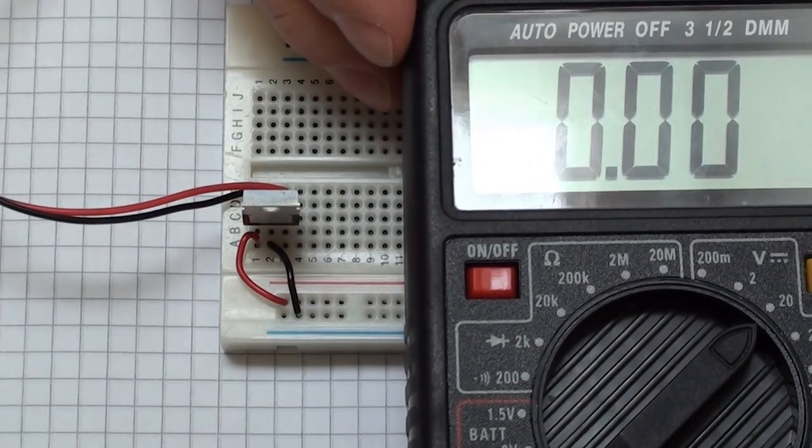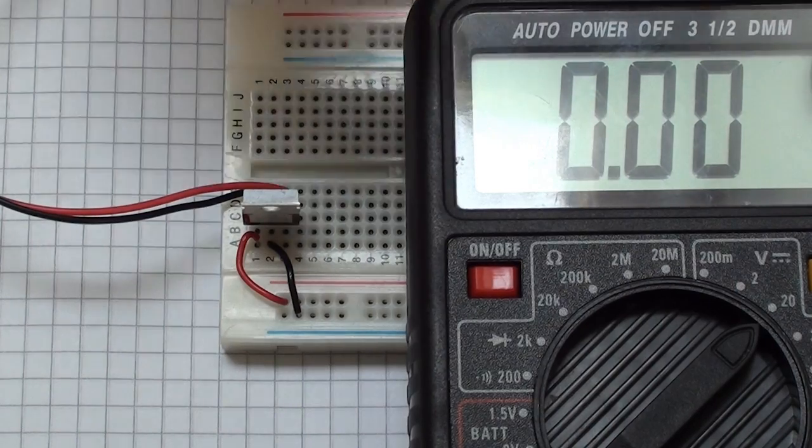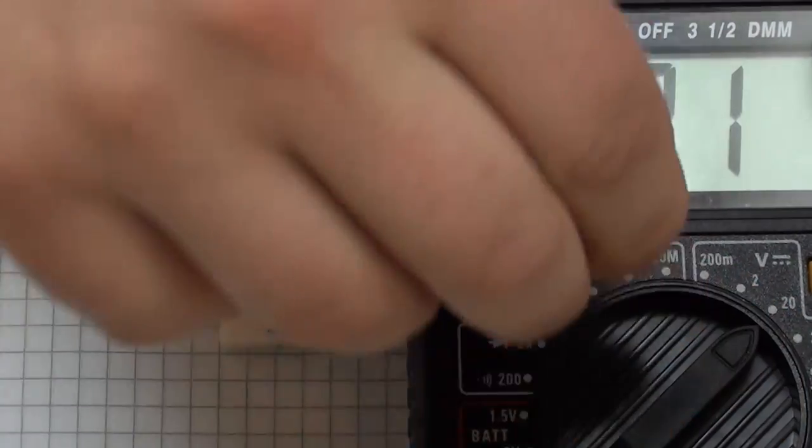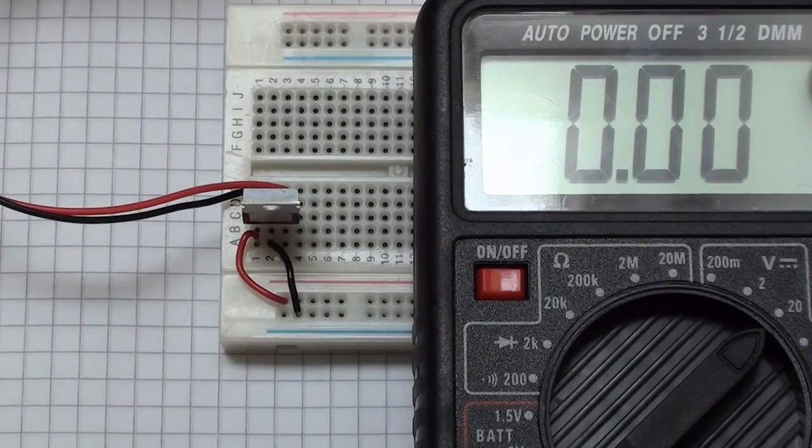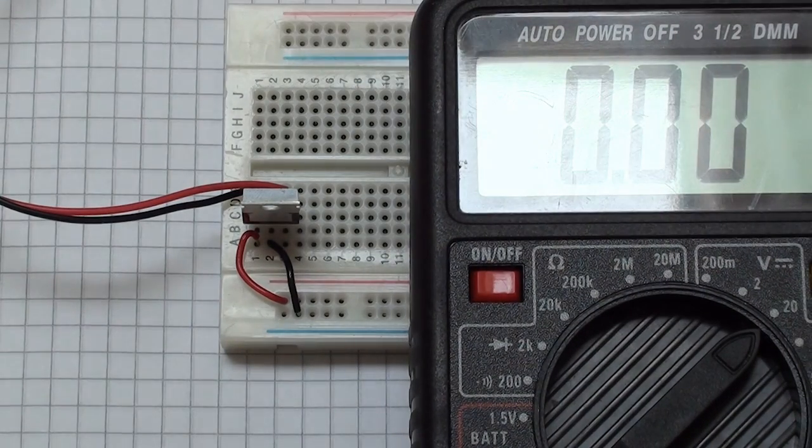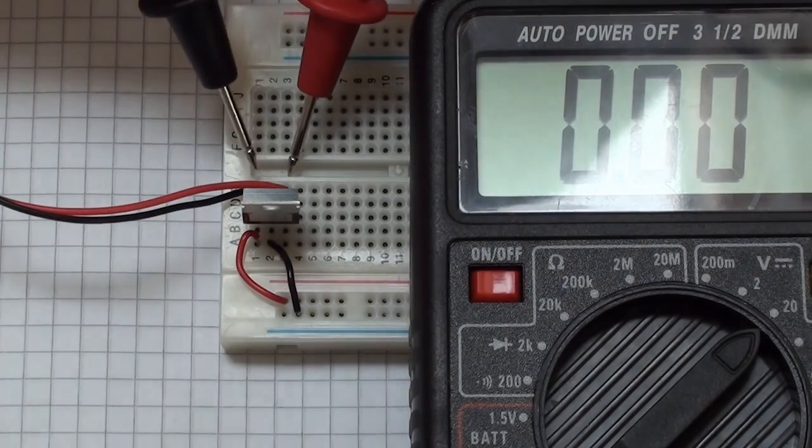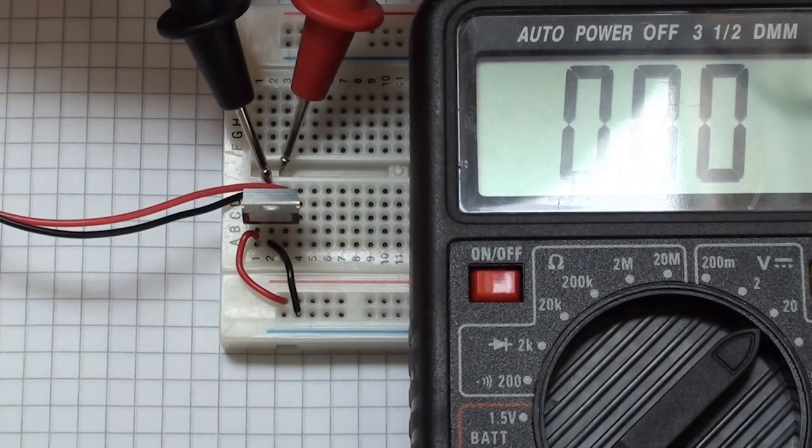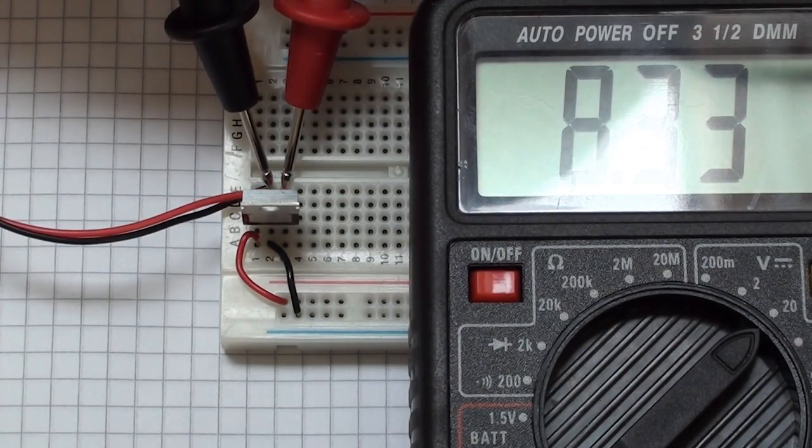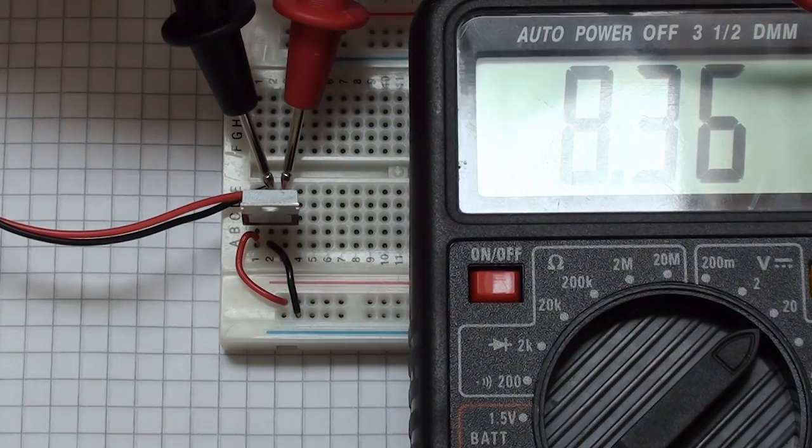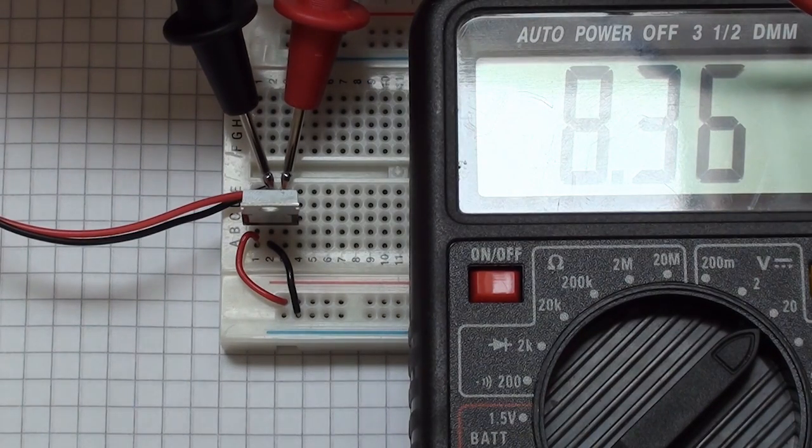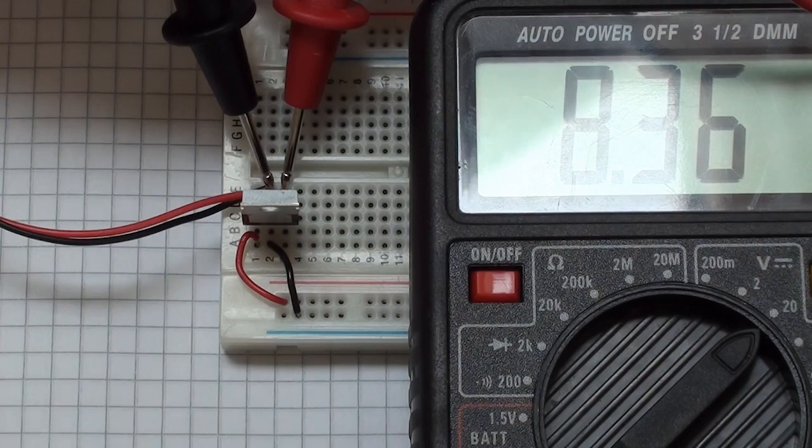Take your multimeter and set it to DC voltage. If we set it to 20 volts here, we should be fine to measure. So we should be able to measure now our input voltage - this should be around 9 volts. So we measure that. We get 8.36 volts, which is what you would expect from the battery.